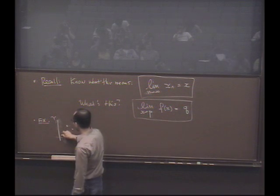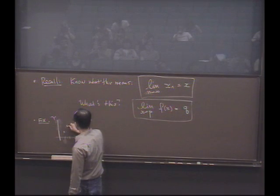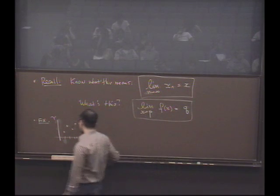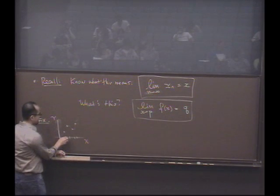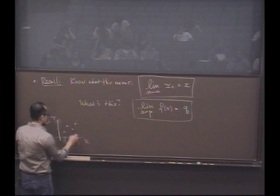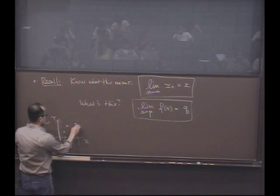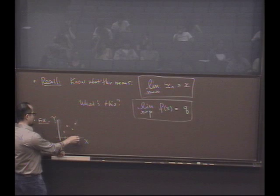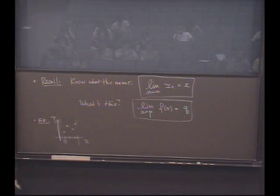So maybe this picture looks something like this if I showed you all the points. And then you could begin to ask: oh, if a bunch of points down here converge to p, what does that mean? Can I say that other points converge, that their images converge to q? That's kind of the question I'm asking.